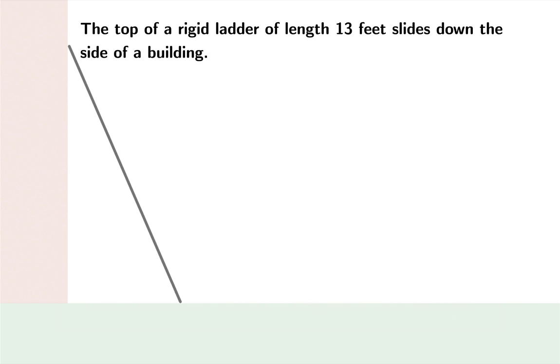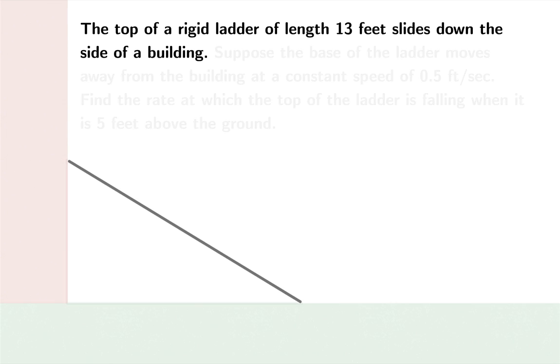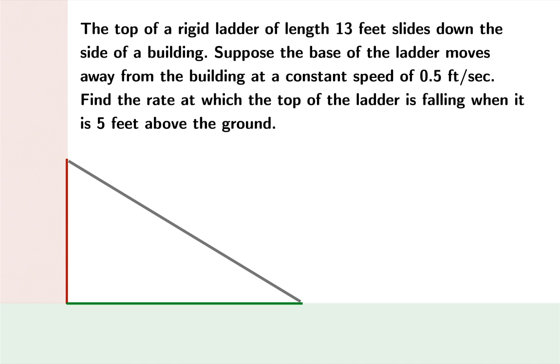Suppose we had a rigid ladder and the top of the ladder slides down the side of a building, and suppose the base of the ladder moves away from the building at a constant speed of 0.5 feet per second. Find the rate at which the top of the ladder is falling when it is 5 feet above the ground.